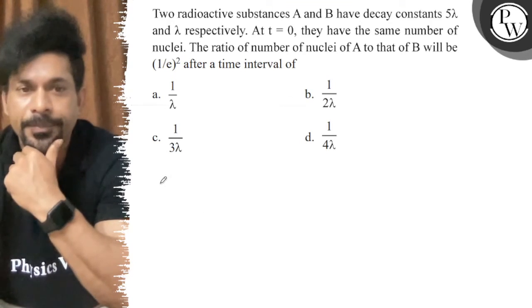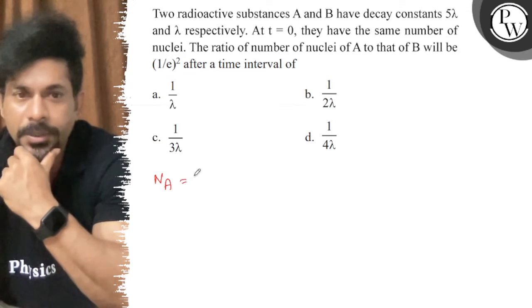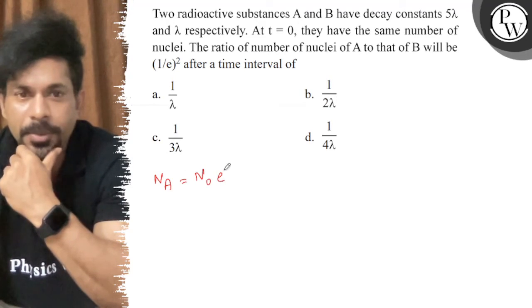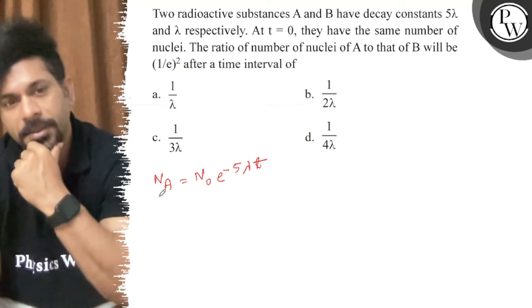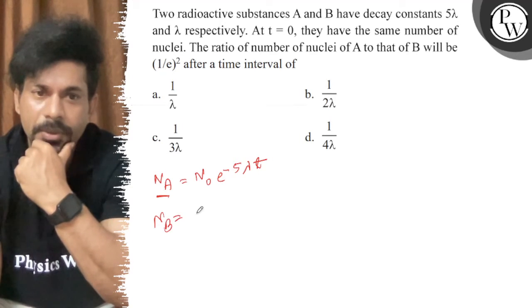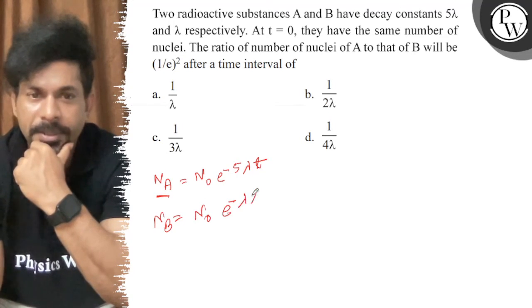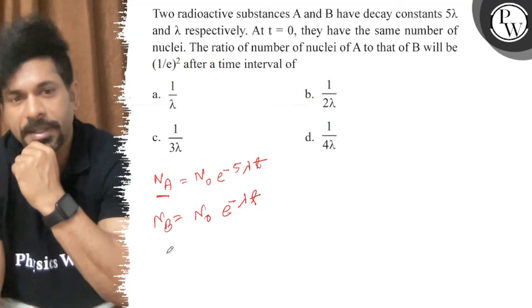N_A equals N_0 e to the power minus 5λt at time t. Similarly, N_B equals N_0 e to the power minus λt because the decay constant is λ. Now we divide both equations.